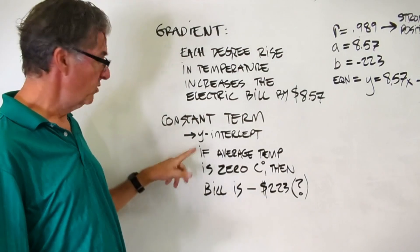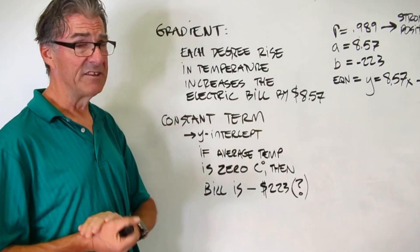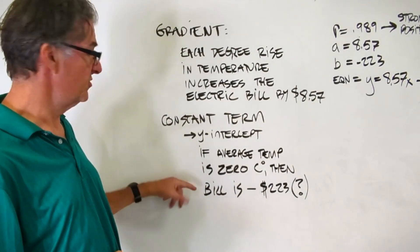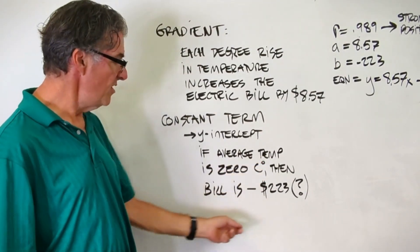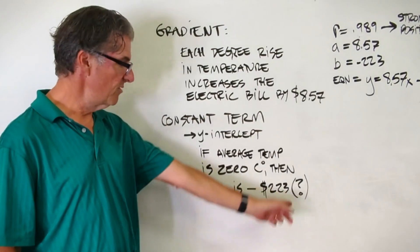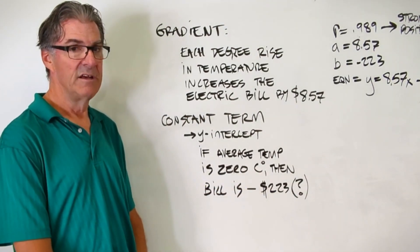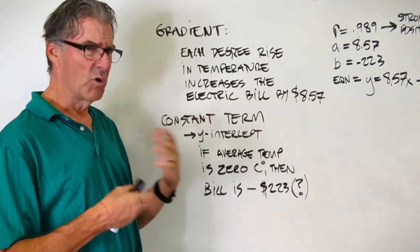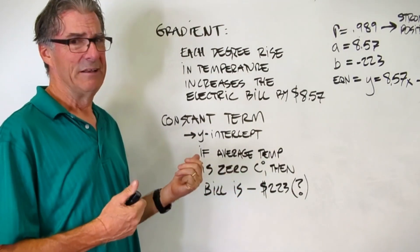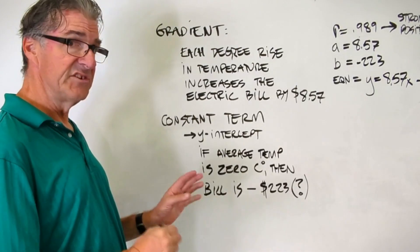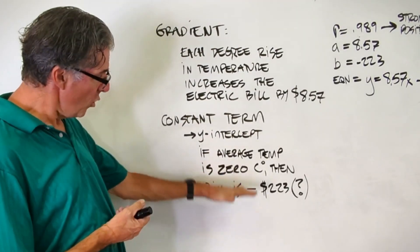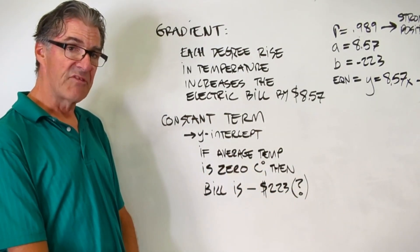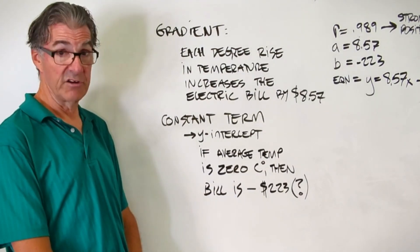Now, the constant term, which is the y-intercept, is a little bit tricky in this one. If we apply the straightforward analysis that we did with our last example, we would come to this conclusion. If the average temperature is 0 degrees Celsius, then the bill is minus 223. Now, I wrote a question mark there because you should have a question about that. Does that mean that if it's 0 degrees Celsius, the electric company is going to pay me $223 for whatever electricity I used? No, it's not going to mean that. So this is a good critical thinking question. What's going on with this? This is clearly a bad result. We can't say this. So think about that real hard. And you might think about how this shows up on a graph.